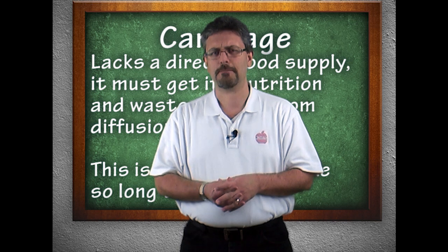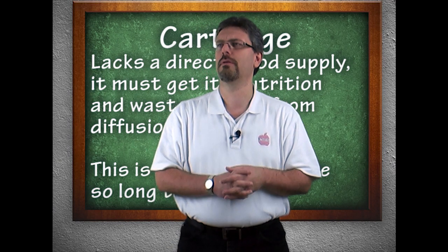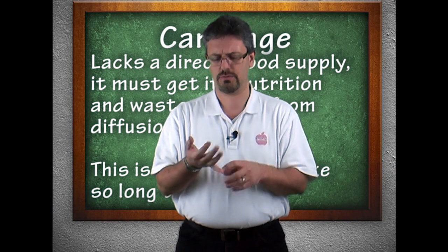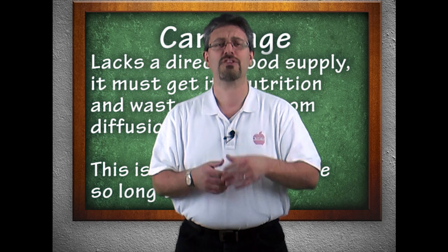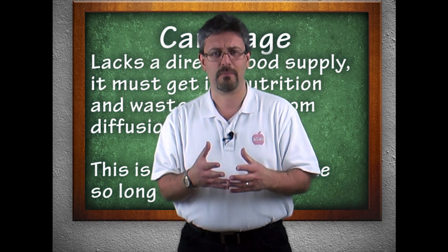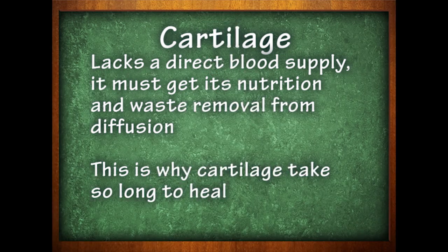Cartilage is an interesting substance. For example, it has no direct blood supply — no direct blood supply. It's going to get its nutrition through diffusion. Cartilage is avascular; it lacks a direct blood supply, which means that it's going to get its nutrition through diffusion.